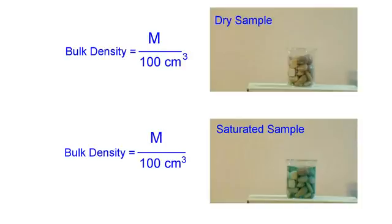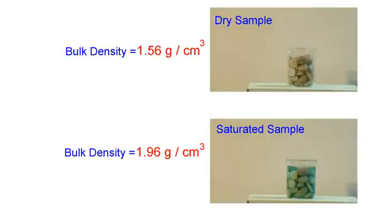Now we will plug in our measurements of mass. Our dry weight measurement was 156.4 grams, and the weight of the saturated sample was 196.4 grams. When we do the math, we see that there is a significant difference in our results, and that difference is significant enough to make our bulk density readings virtually worthless.